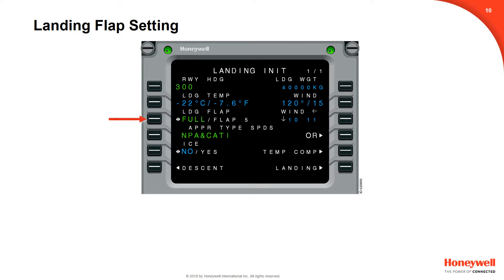The landing flap setting is displayed on line 3 left. The pilot can toggle between full flaps and flaps 5 by pressing line select key 3 left. If the aircraft is 2.5 nautical miles from the destination and the actual flap position does not match the flap selection on the landing init page, a check landing flap scratch pad message will appear.